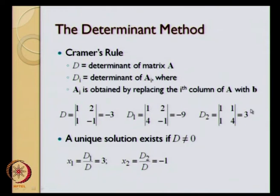We get these values of determinants. A unique solution exists if the determinant D — that is, the determinant of matrix A — is not equal to zero. If this determinant is equal to zero, then we will either have no solution or we will have an infinite number of solutions.